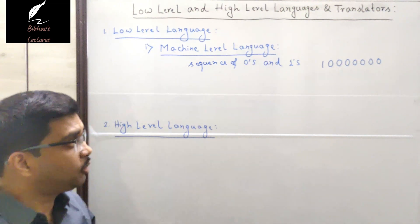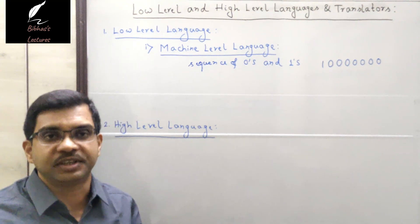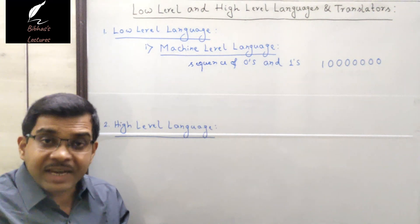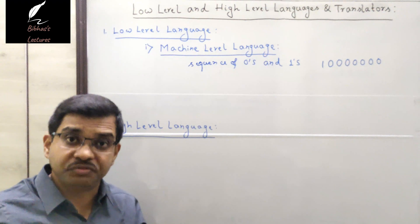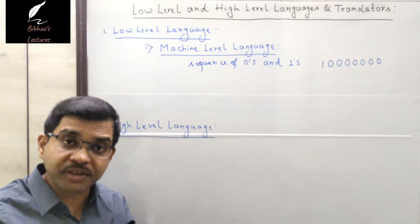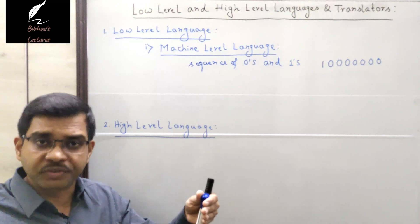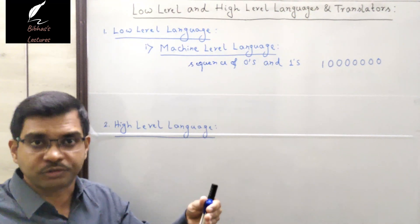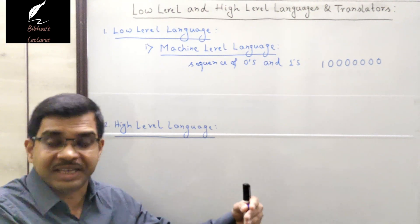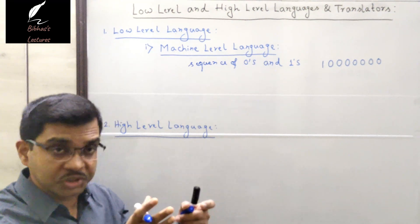The main advantage of machine language is that it does not need any translator to translate the language because it is already in machine language. Since no translator is required, it is very fast. But it is machine dependent — it depends on the hardware of the machine. Each machine has different hardware, so the set of instructions is also different. A program written in machine language for one machine may not run on another machine.